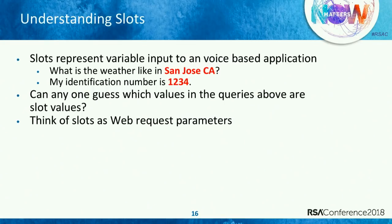Slots are things that vary in a statement. For example, 'what is the weather like in San Jose, California?' or 'my identification number is 1, 2, 3.' The slot values in those two sentences are 'San Jose, California' and '1, 2, 3, 4.' Think of slot values as your inputs and web request parameters that you attack in an application.